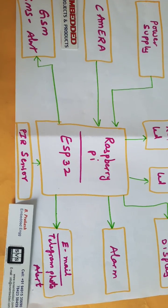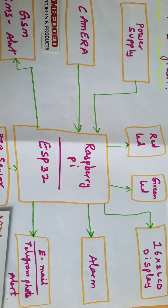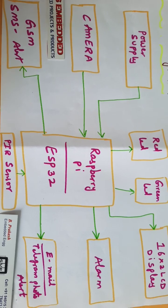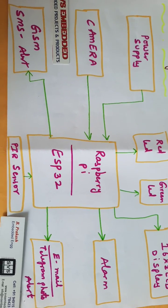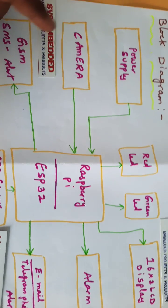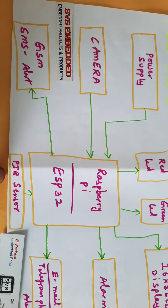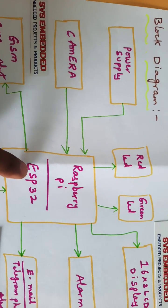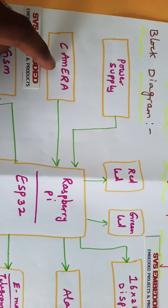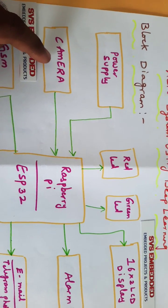If any animal or particular object is moving to the camera or any device on particular location, first the PIR camera will detect and it will give to Raspberry Pi or ESP32 board. Then camera will capture that image and it will identify which animal it is.